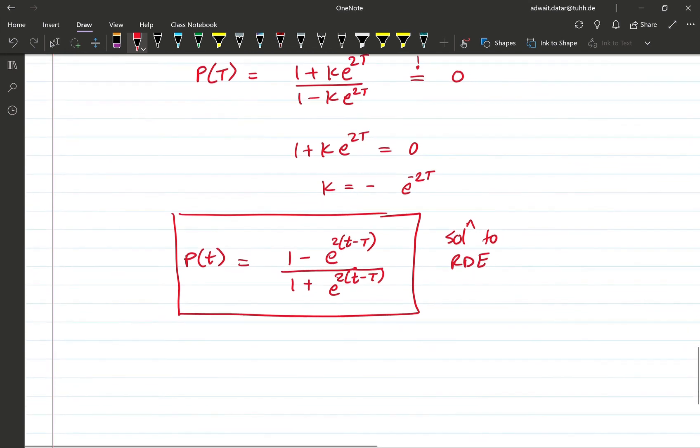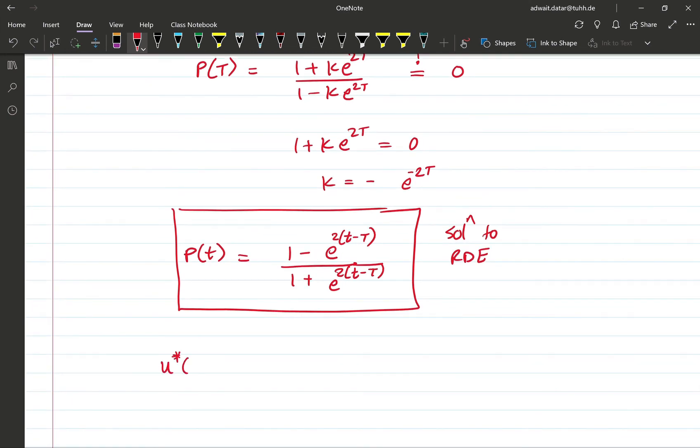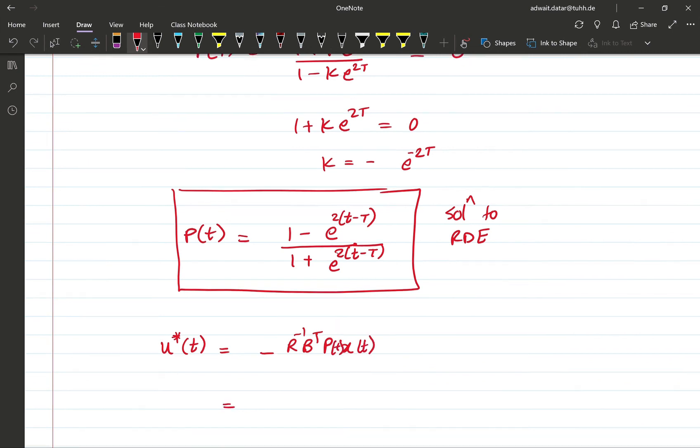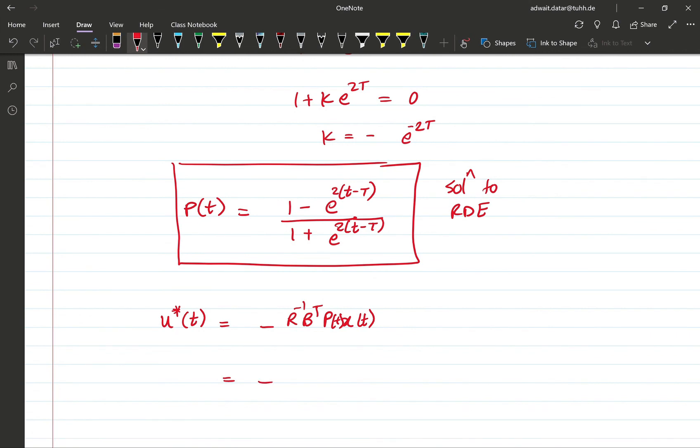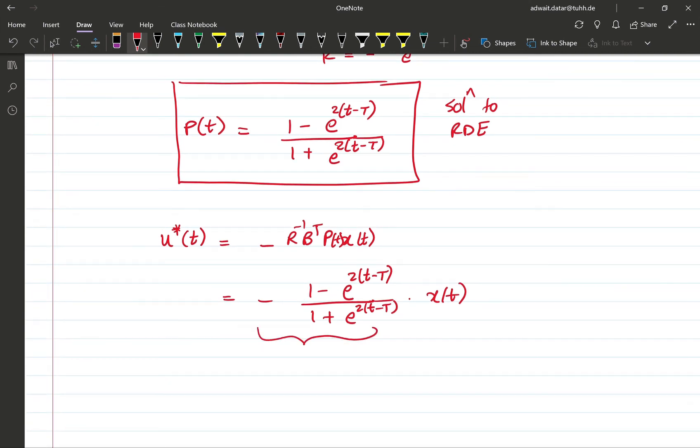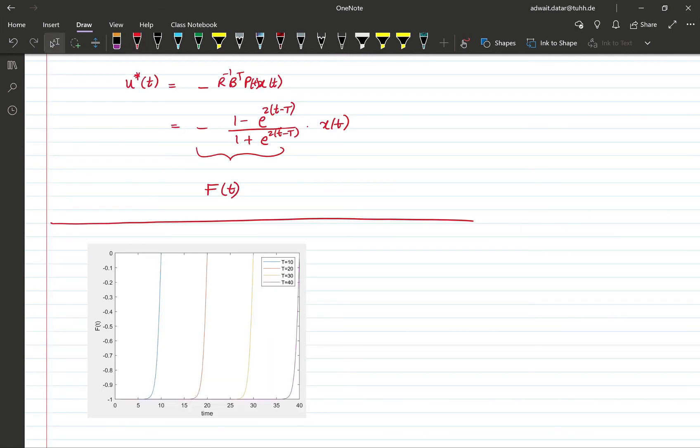The optimal control input, as you already saw, is then given by -R⁻¹B^T P(t) x(t). P is also depending on t, so we obtain -R is 1, B is 1, (1 - e^(2(t-T)))/(1 + e^(2(t-T))) times x(t). So this part can be thought of as a time-varying gain.